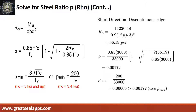Given short direction discontinuous edge moment equals 11,220.48 inch-pounds, resistance factor equals 0.9, b equals 12, and d equals 4.3. The beam design ratio Rn equals 56.19 PSI, and reinforcement ratio ρ equals 0.00172. Use ρ minimum of 0.00606.